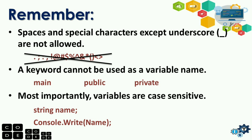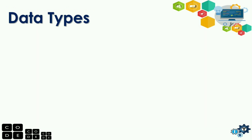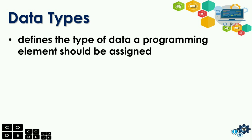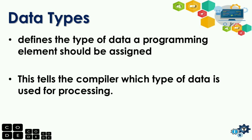Now, let's go with data types. A data type defines the type of data a programming element should be assigned. It tells the compiler which type of data is used for processing. So the data type tells the variable what it can only hold — other types are not accepted. That is the work of the data type.